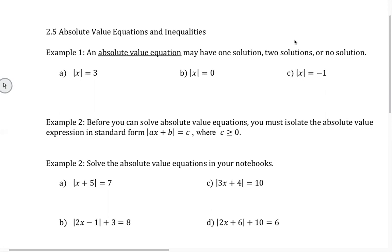Absolute value equations typically have two answers, because it's distance. You could walk to the left, or you could walk to the right, and it'll make sense to you in a second.